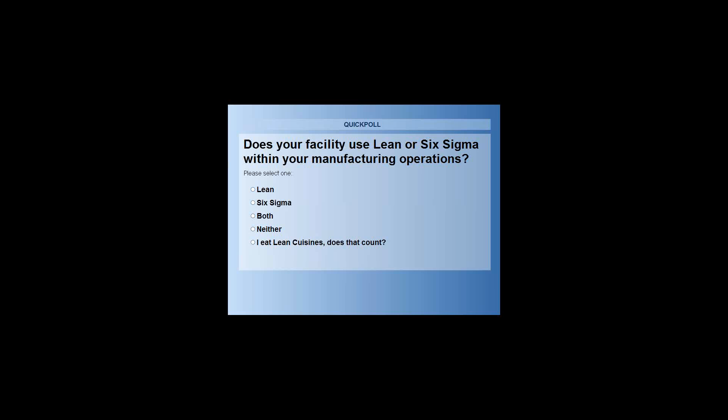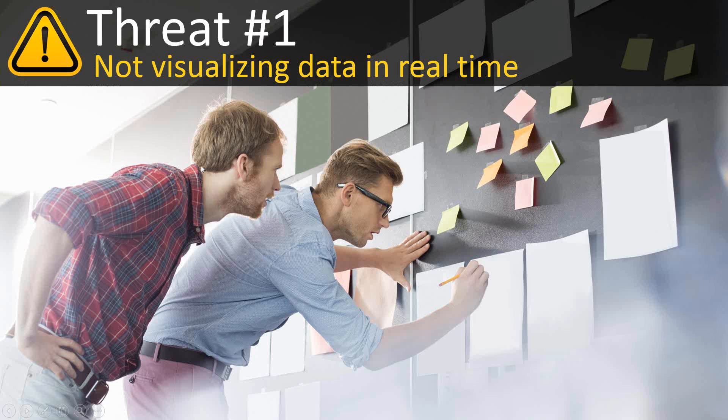It looks like most people are answering both lean and Six Sigma. One of the principles of lean is the visual monitoring of the production line. So let's move into that with the first threat we've identified: not visualizing data in real time. Can you talk about that threat and how it impacts manufacturing operations?